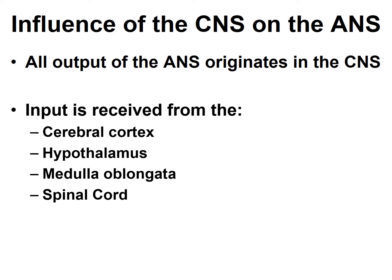Input for autonomic nervous system control is received from three principal portions of the central nervous system: the cerebral cortex via the limbic system, the hypothalamus, the medulla oblongata, and the spinal cord.